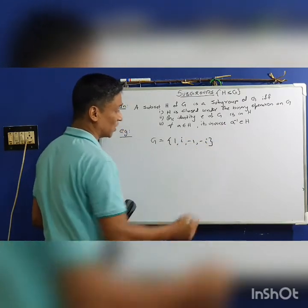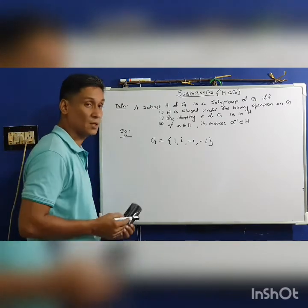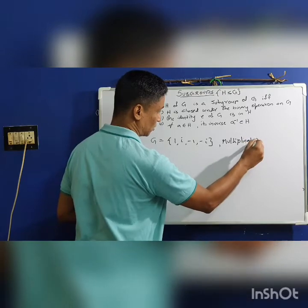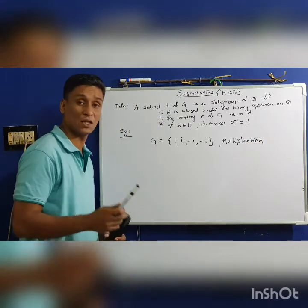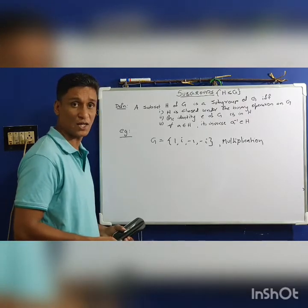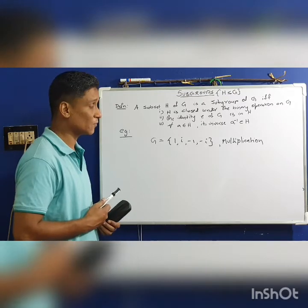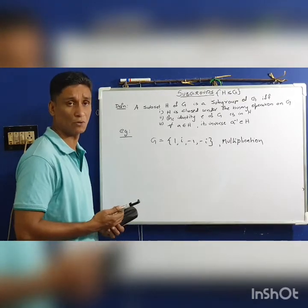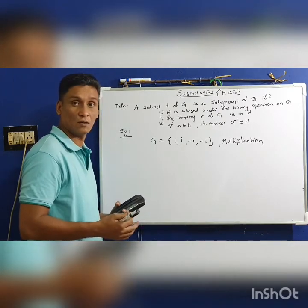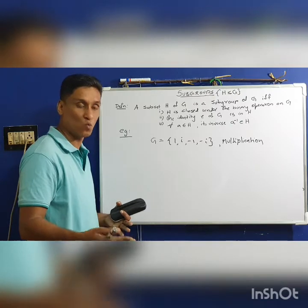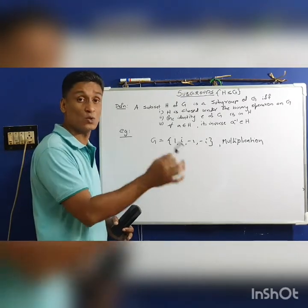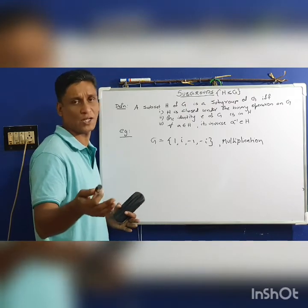The second example involves the set G = {1, i, -1, -i} under usual multiplication. It can be verified as a homework or assignment question that G is a group under usual multiplication.